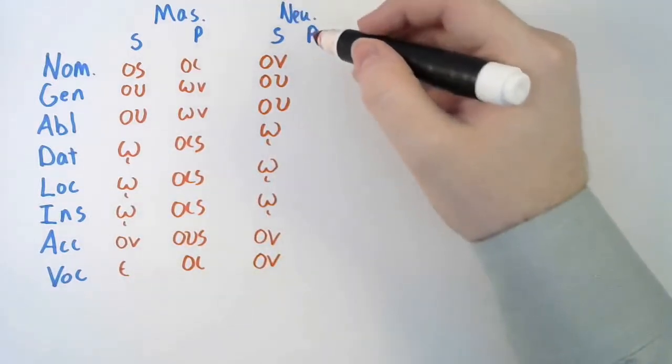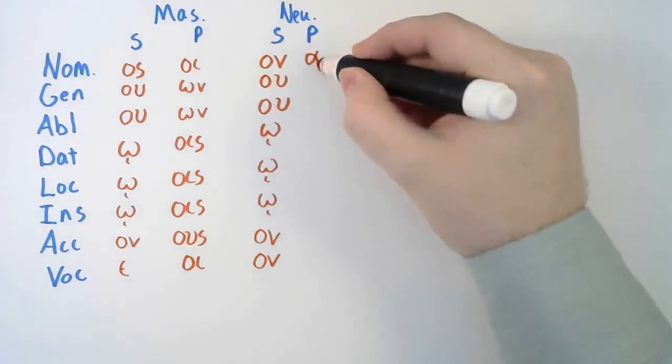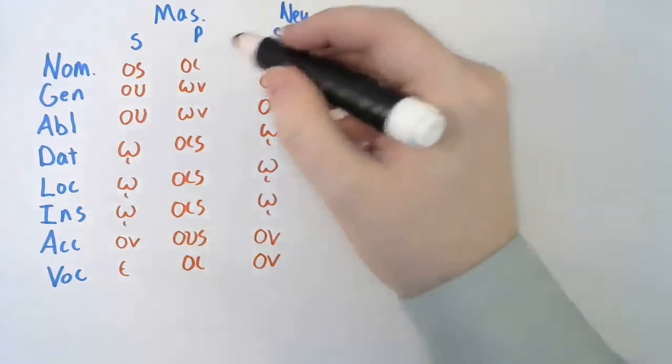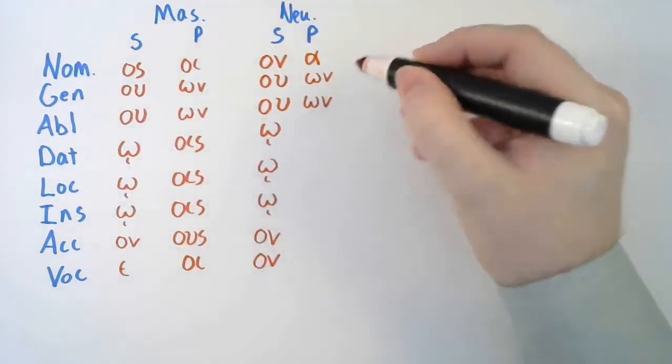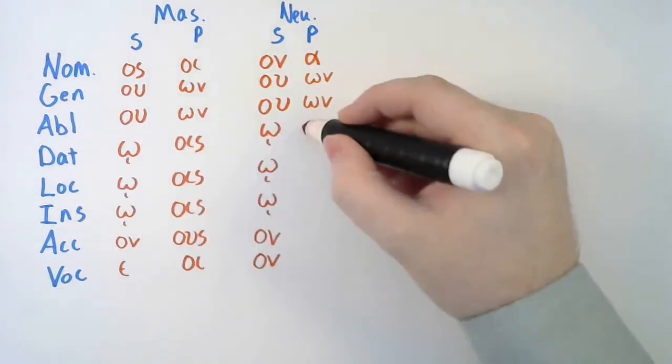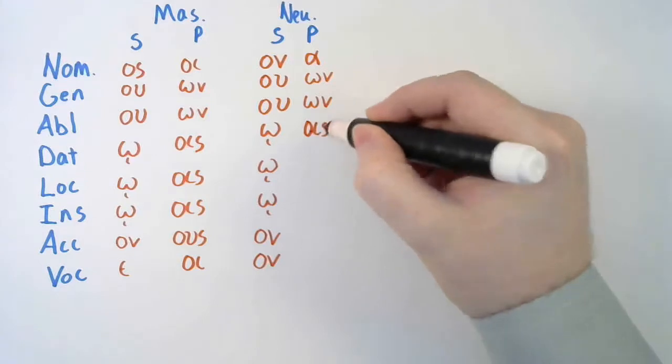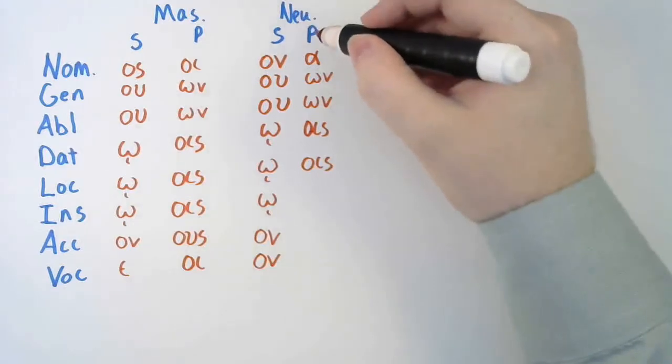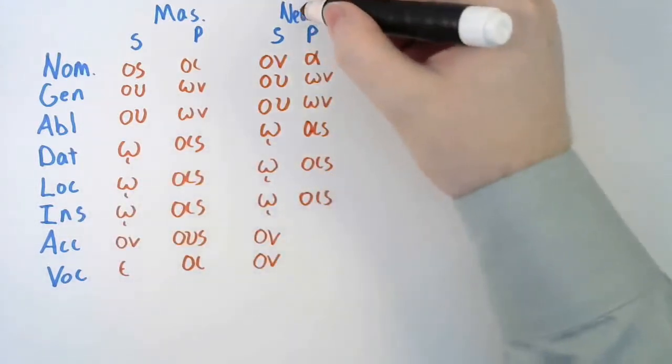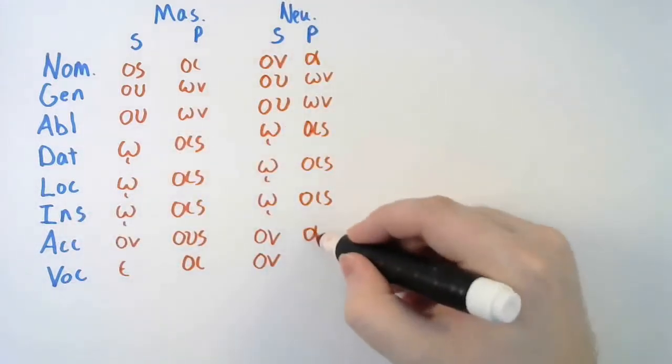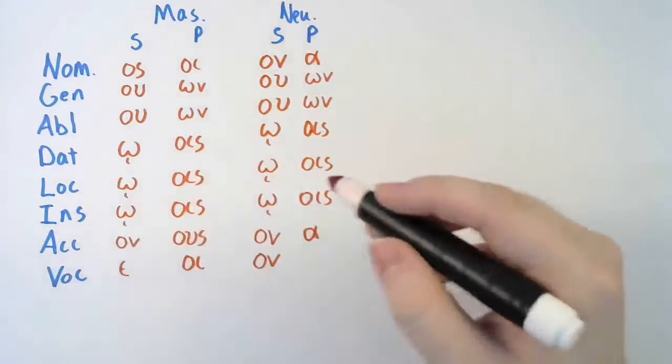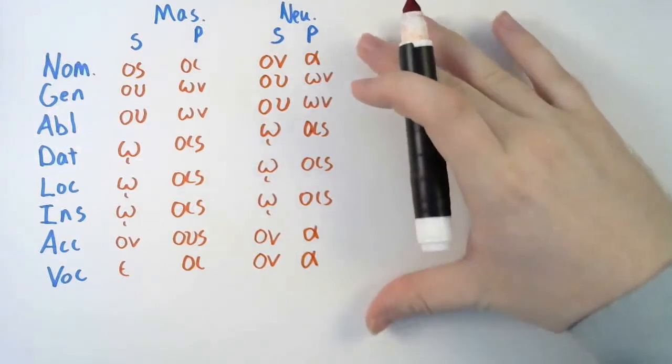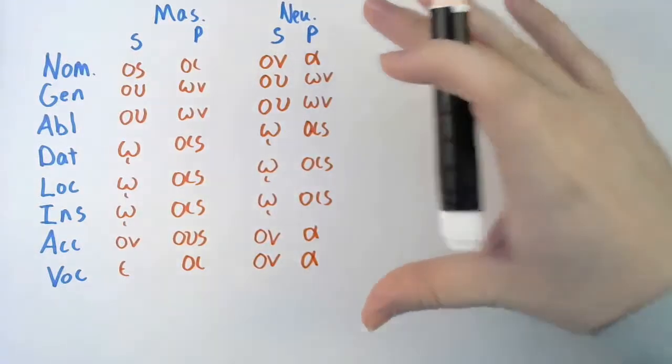Now for the plurals. Neuter plural nominative is a. Neuter plural genitive is on. Neuter plural ablative is on. Neuter plural dative is ois. Neuter plural locative is ois. Neuter plural instrumental is ois. Neuter plural accusative is a. And neuter plural vocative is a. And there you go. That is all the endings for the second declension nouns. Masculine and neuter.